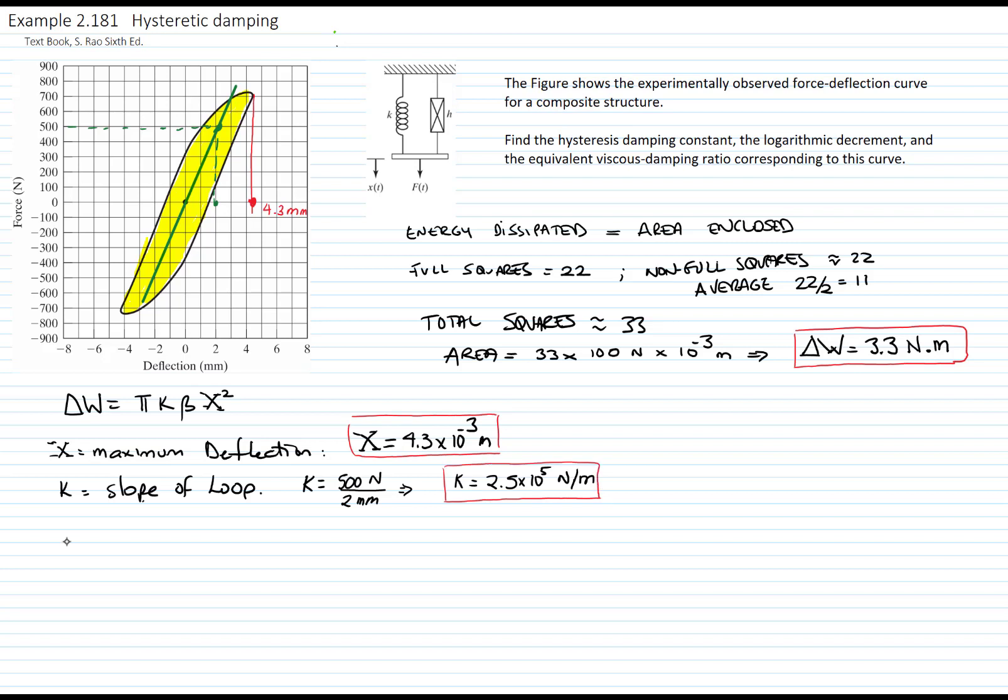Now that we have all the parameters, we can solve the equation for beta, which is the hysteretic damping constant. So beta will be equal to the dissipated energy divided by pi, the constant of the spring, and the maximum deflection squared. I will plug in the values. This is 3.3 divided by pi, 2.5 times 10 to the 5th, and displacement 4.3 times 10 to the negative 3.